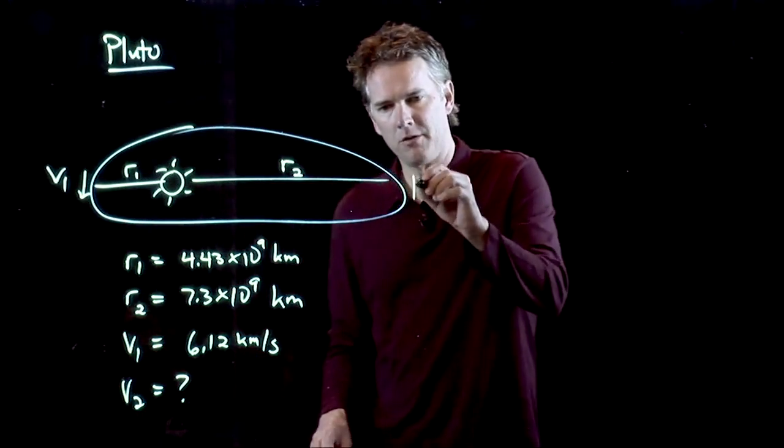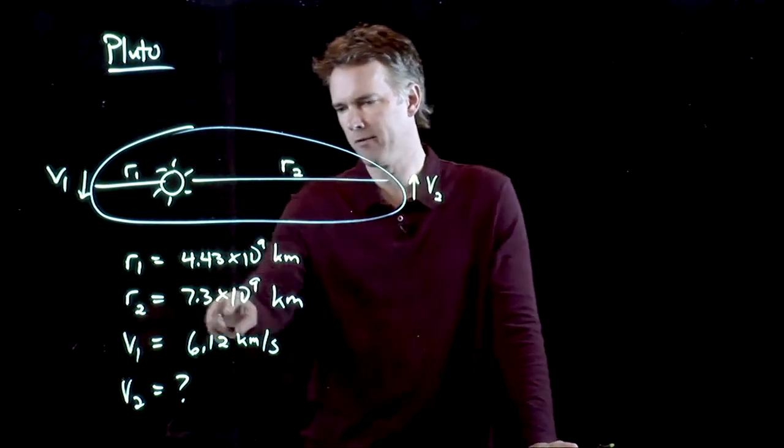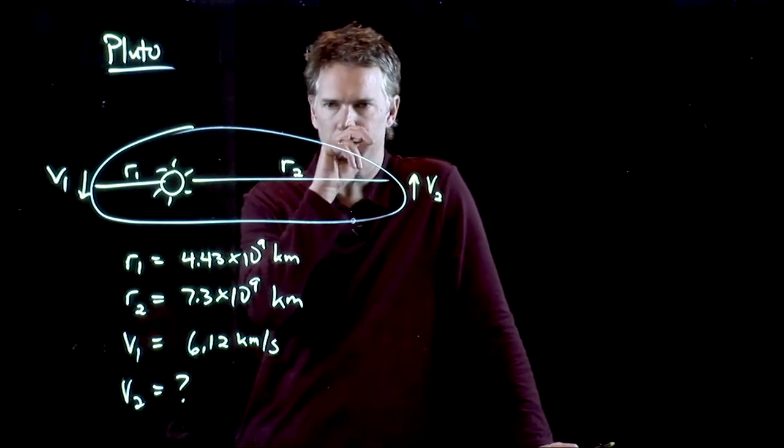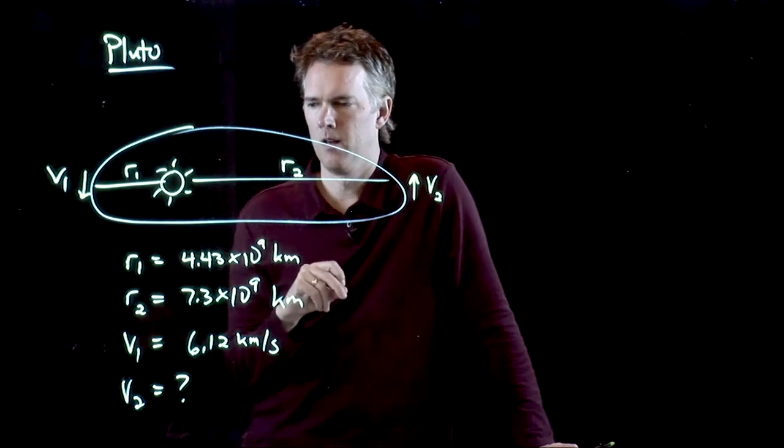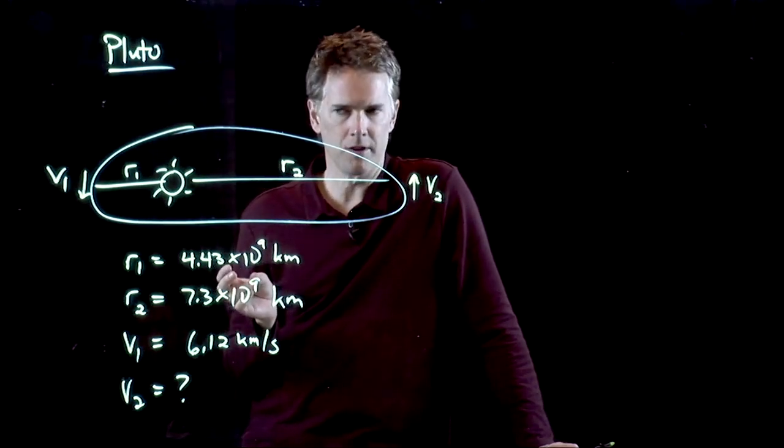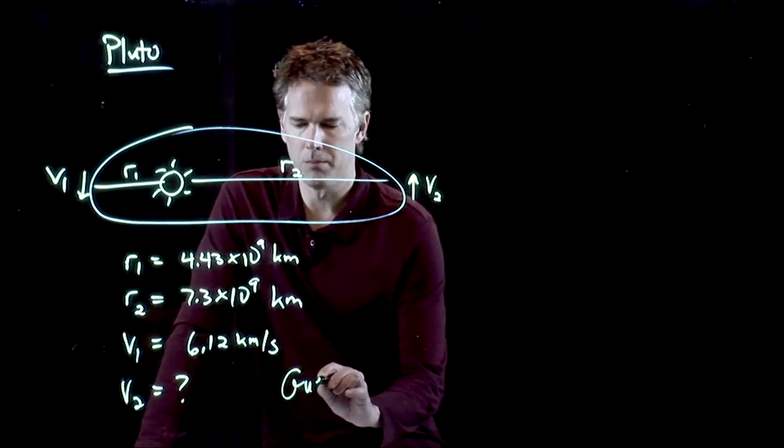When it gets out to its farthest point, it is moving at some speed V2. We know that distance. It's 7.3 times 10 to the 9 kilometers, and we need to figure out what V2 is. So let's take a guess, and then we'll see if we can calculate it.